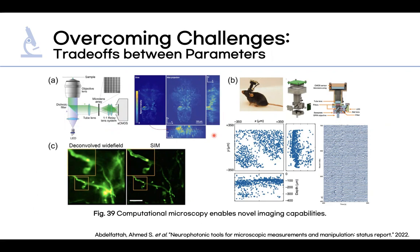For 3D recording of neuronal activity in freely moving animals, similar concepts have enabled miniaturized microscopes such as Mini-LFM. The schematic for Mini-LFM is shown here, and Mini-LFM is shown attached to a mouse's head. This has been used to capture 3D recordings of neuronal activity in freely moving animals.